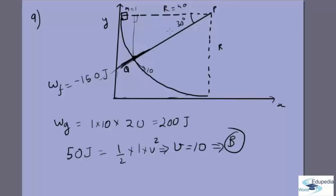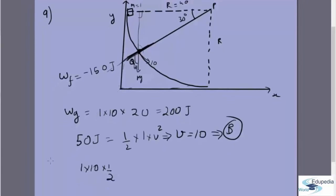If this is mg, this is 60 degrees. So N minus mg cos 60, that is N minus 1 into 10 into half, equals mV squared over R, which is 1 into 10 squared, that's 100, by 40.